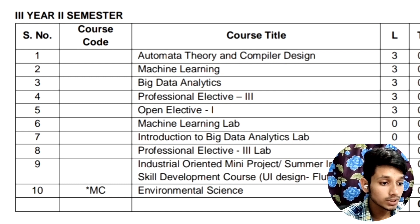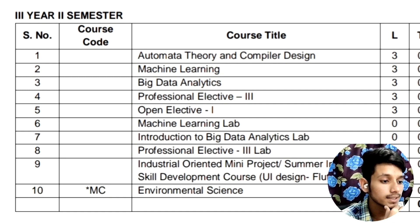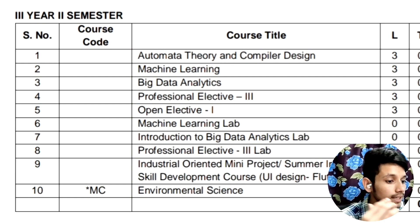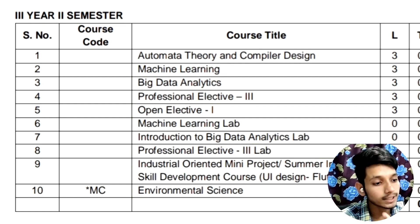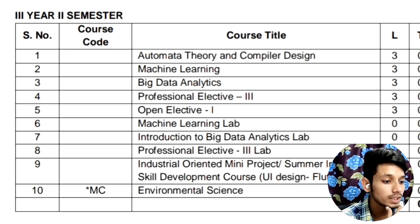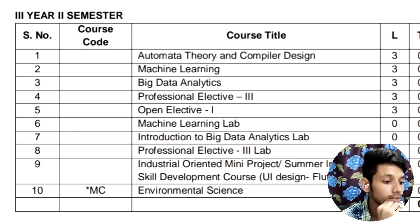In the second semester of third year, you will be having the subjects Automata Theory and Compiler Design, Machine Learning, Big Data Analytics, Professional Elective 3, and Open Elective 1. Labs include Machine Learning, Introduction to Big Data Analytics, and a Professional Elective 3 lab. You will also have a mini project and an Environmental Science subject without any credits.